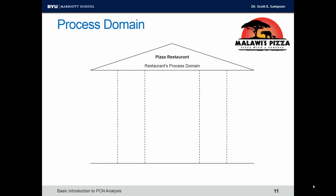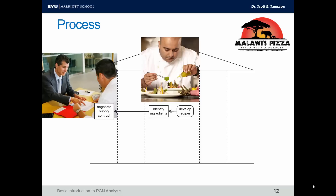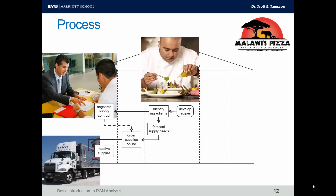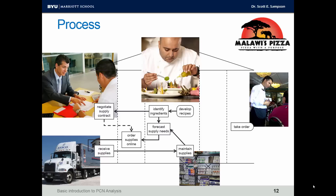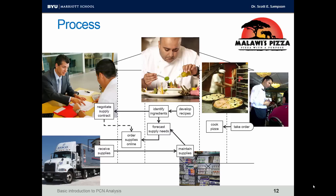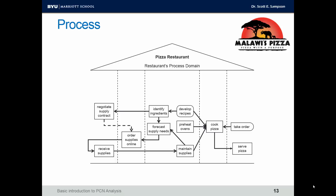This next diagram looks like a building — it's a process entity as part of a PCN diagram. It represents an entity that has a process domain. The process domain includes all processes that are directly performed, directed, and controlled by that entity. For Malawi's Pizza, the process domain might include steps such as developing recipes, identifying ingredients, negotiating supply contracts, forecasting supply needs, ordering supplies online, receiving supplies from a supplier like Cisco, maintaining supplies in a stock room, taking orders, preheating ovens, cooking the pizza, and serving the pizza.